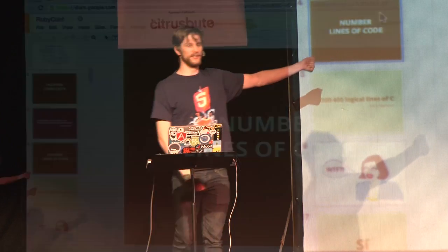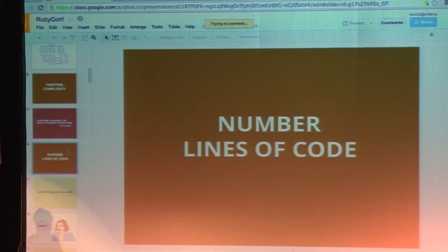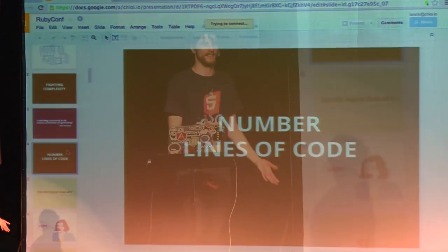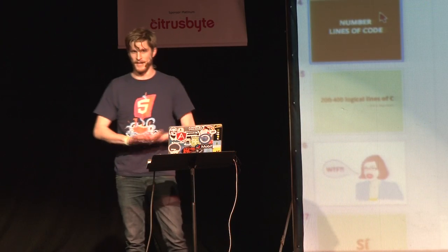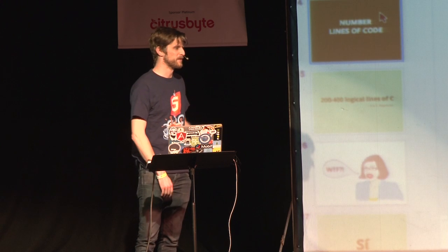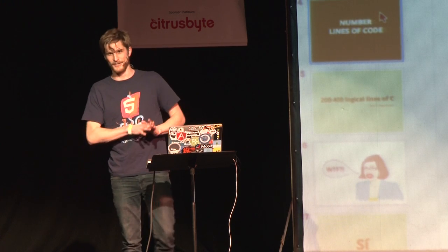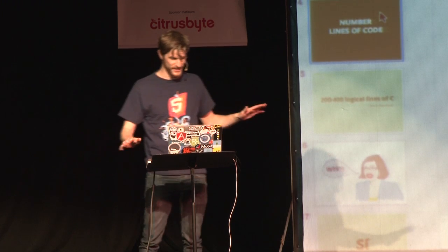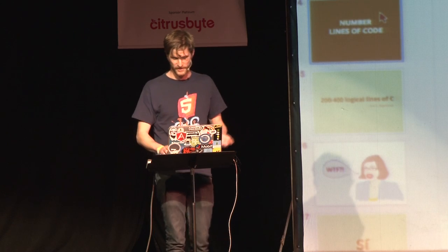Number of lines of code is actually a really great way to measure complexity. Don't let your managers interpret that as productivity, because lines of code is a horrible way to measure productivity, as we all know.